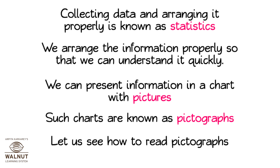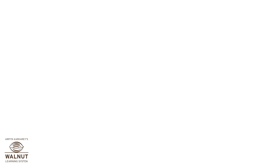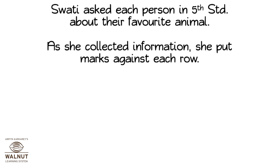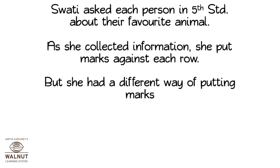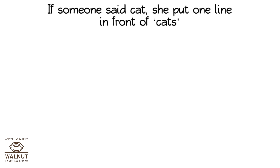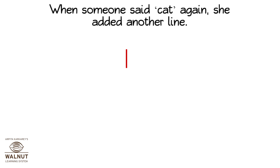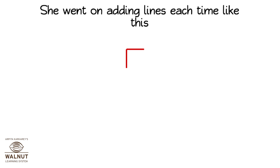Let us see how to read pictographs. Swati asked each person in 5th standard about their favourite animal. As she collected information, she put marks against each row, but she had a different way of putting marks. If someone said cat, she put one line in front of cats. When someone said cat again, she added another line. She went on adding lines each time like this.